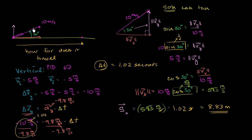In the last video where we launched something at an angle, we figured out the horizontal and vertical components of that launch velocity. We used the vertical component to figure out how long the object is in the air, then used that time to figure out how far it will travel given a constant horizontal velocity. In this video, I want to redo part of that problem in a slightly more complicated but more powerful way.